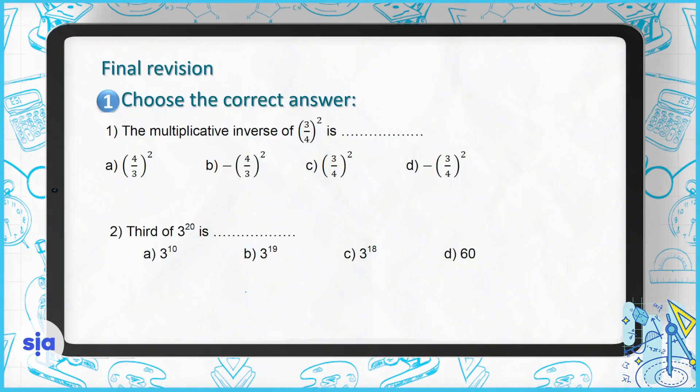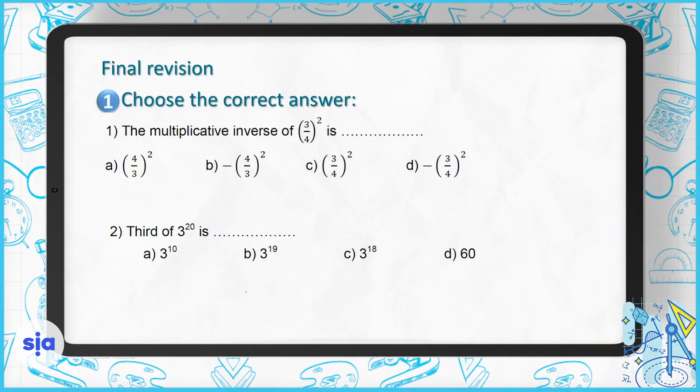Question 1 is to choose the correct answer: what is the multiplicative inverse of (3/4) all to the power of 2? We know that the multiplicative inverse means we flip the fraction, so the multiplicative inverse is (4/3) all to the power of 2. The right answer is choice A.